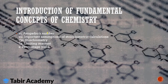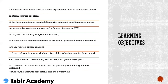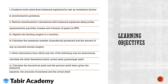Under this heading we will focus on the learning objectives. By the end of the topic, after you have gone through your book, notes, and these videos, you should be able to calculate the maximum number of products produced and the amount of any unreacted excess reagent, calculate theoretical yield and percentage yield, perform stoichiometry calculations, and explain the limiting reagent in a reaction.